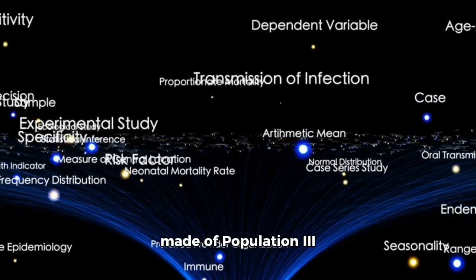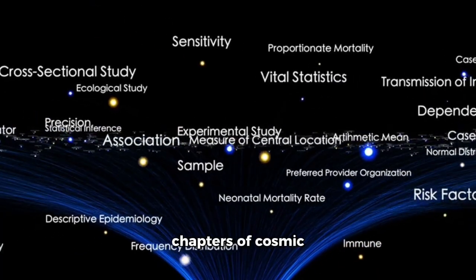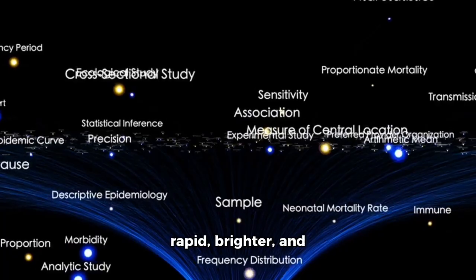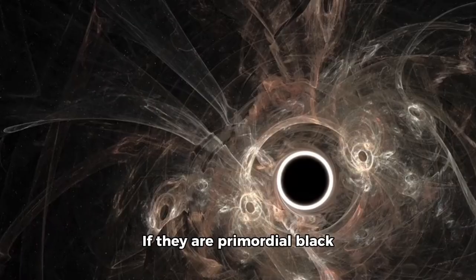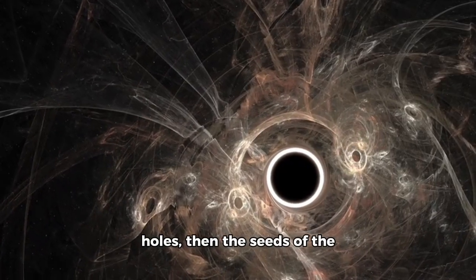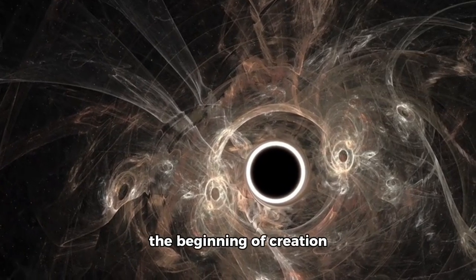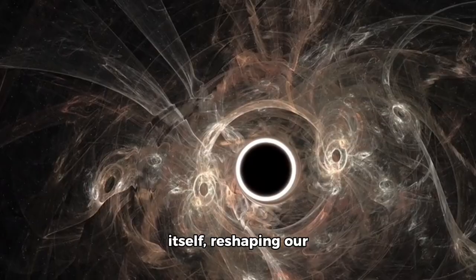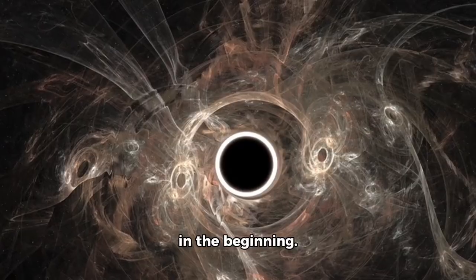If they are galaxies made of Population 3 stars, the initial chapters of cosmic history were much more rapid, brighter, and significantly more violent than we ever envisioned. If they are primordial black holes, then the seeds of the universe's most extreme objects were sown right from the beginning of creation itself, reshaping our understanding of how matter, light, and gravity evolved in the beginning.